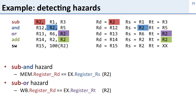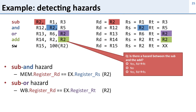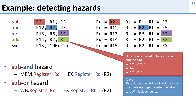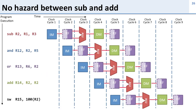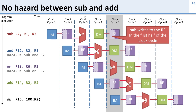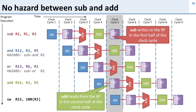We also have an ADD instruction which uses R2 as its source. Is there a hazard between the subtract and the ADD? No, there isn't — because they are three cycles apart, so the double-pumped register file takes care of this. In cycle 5, the subtract instruction writes into the register file in the first half of the cycle, and the ADD instruction reads from the register file in the second half of the clock cycle. So for the ADD instruction, there's no hazard.